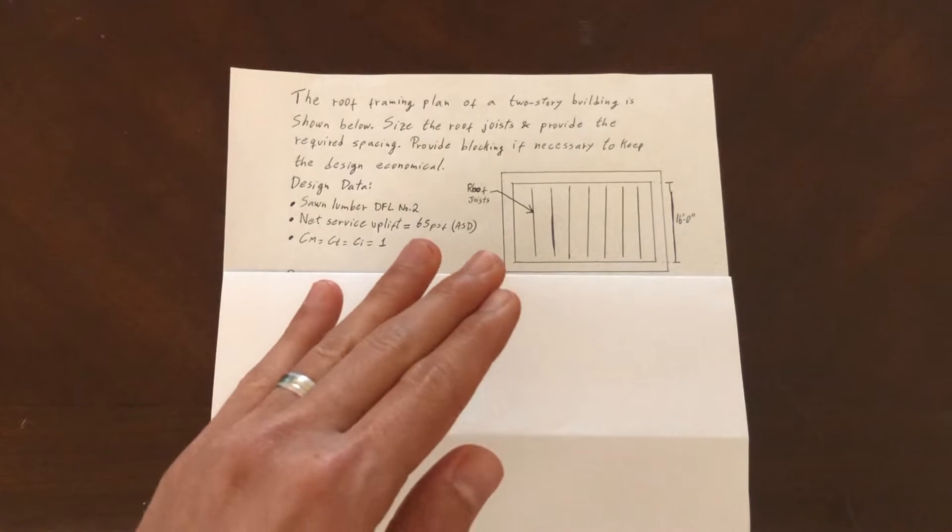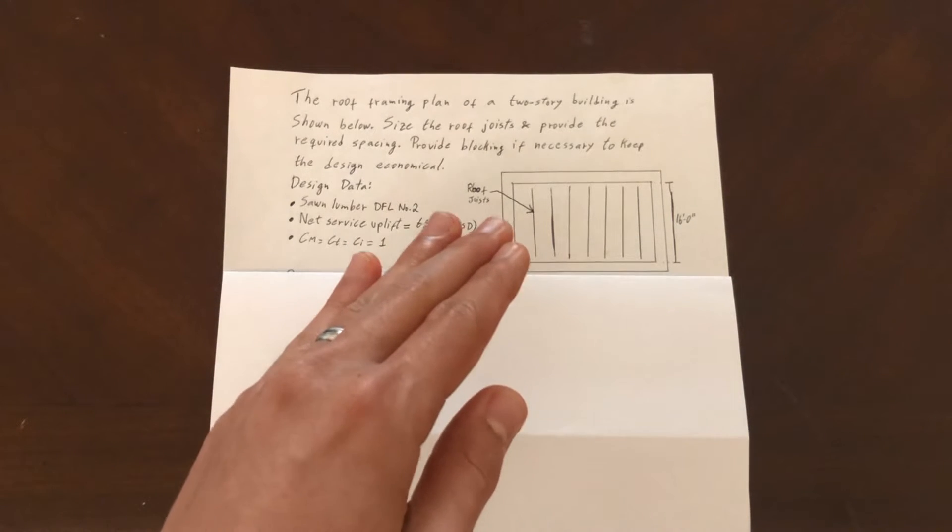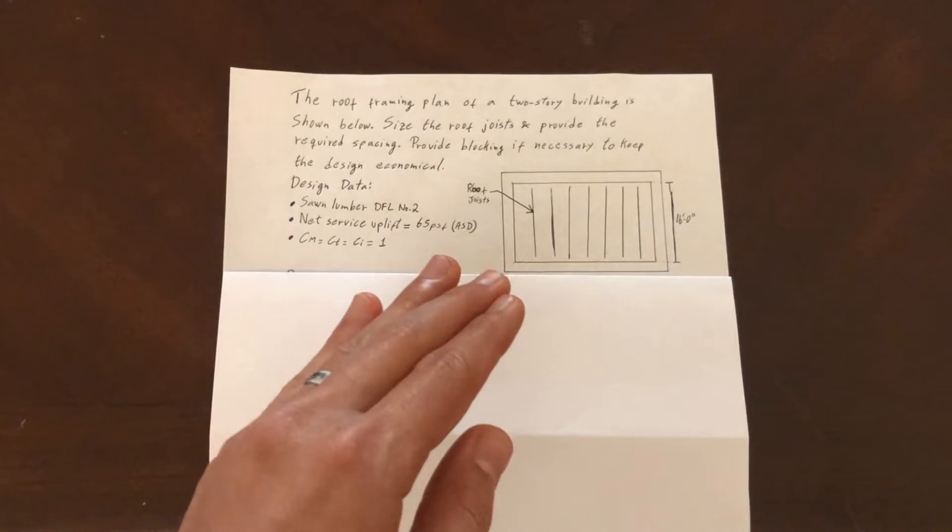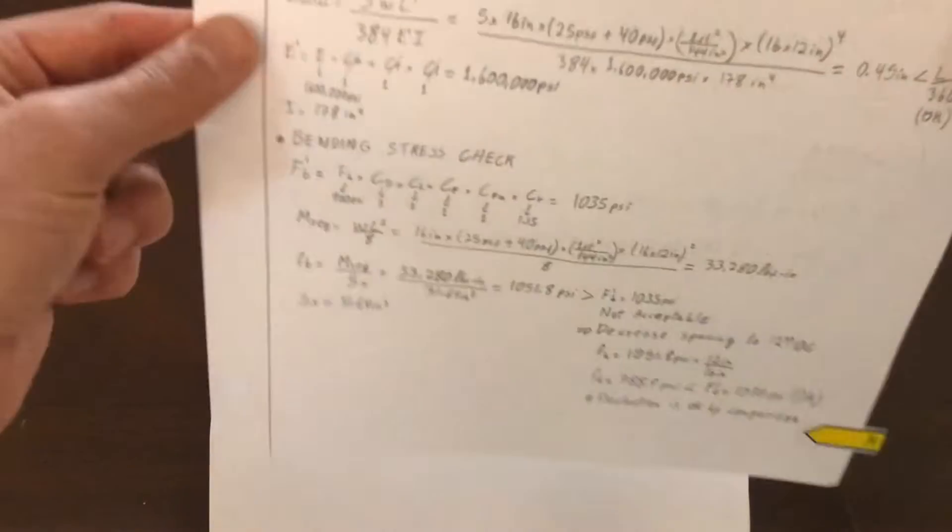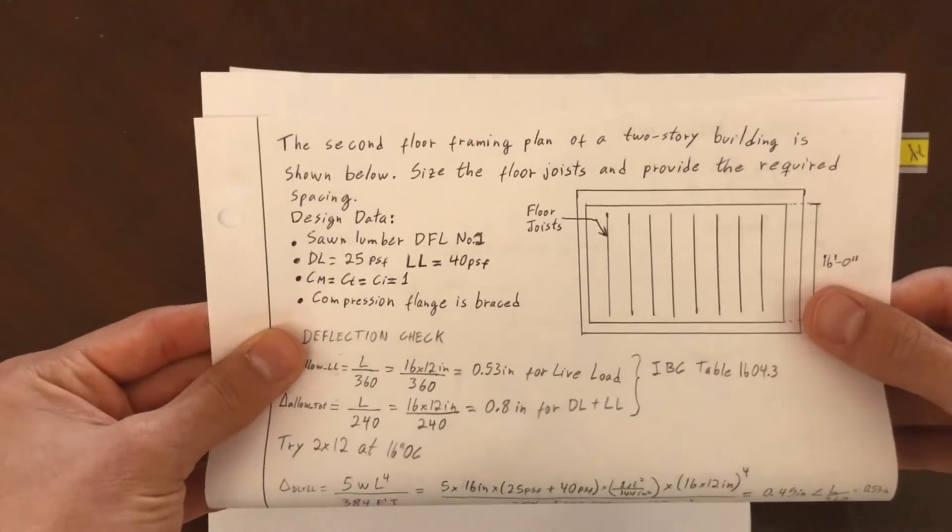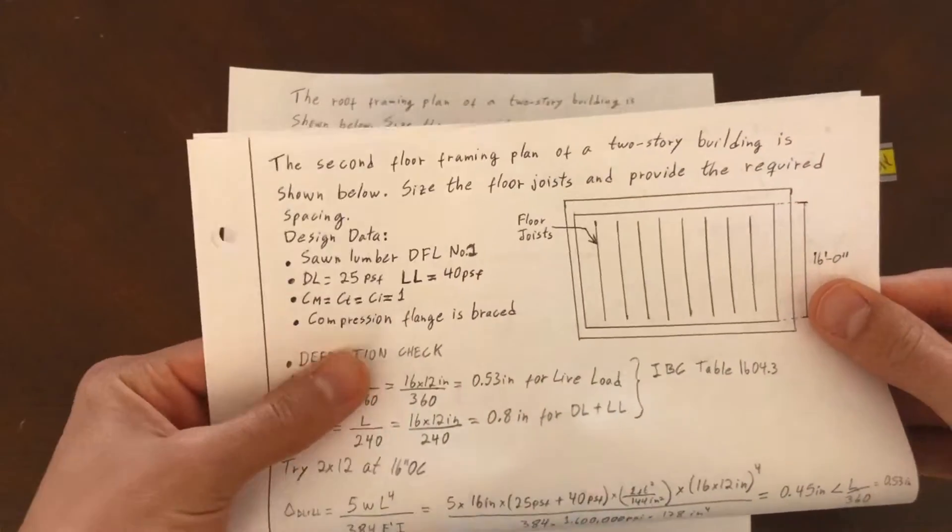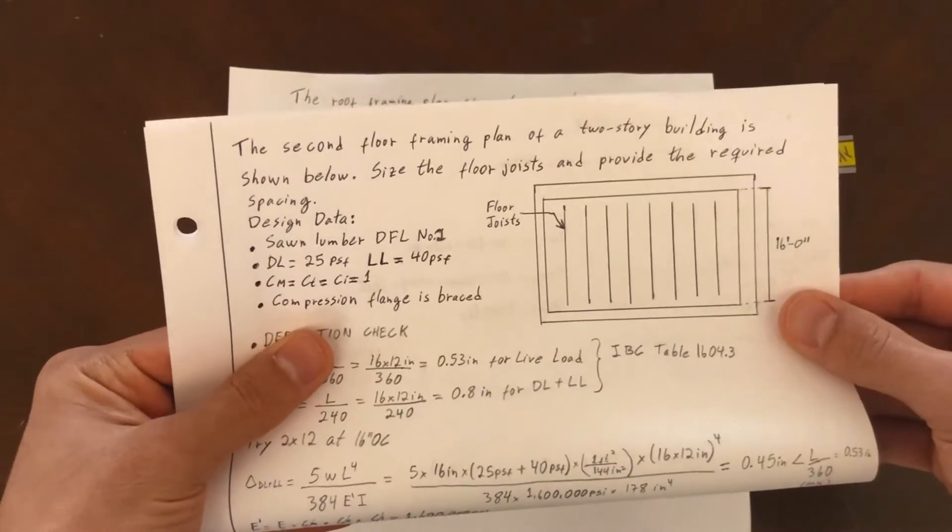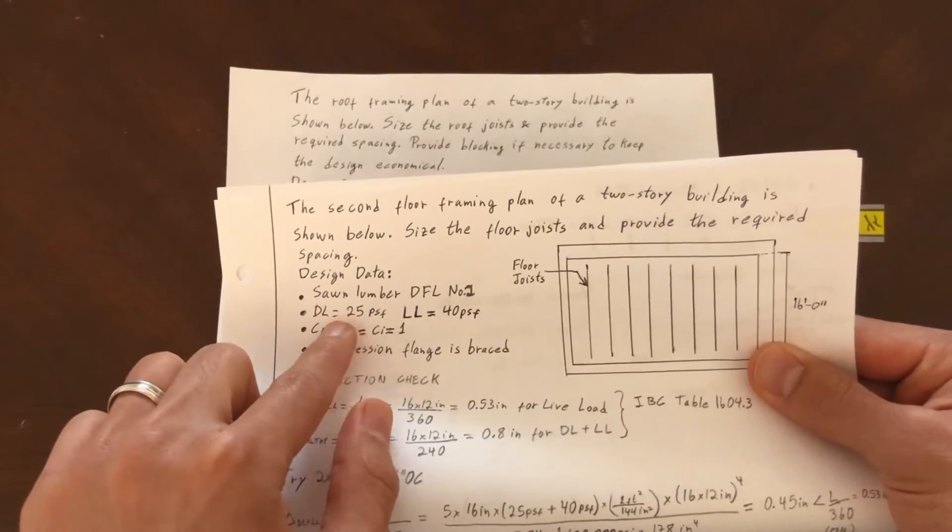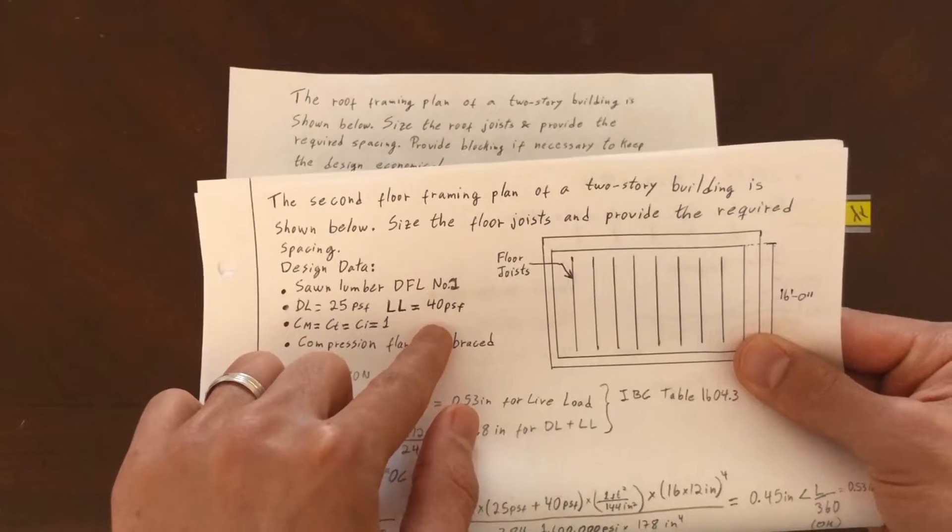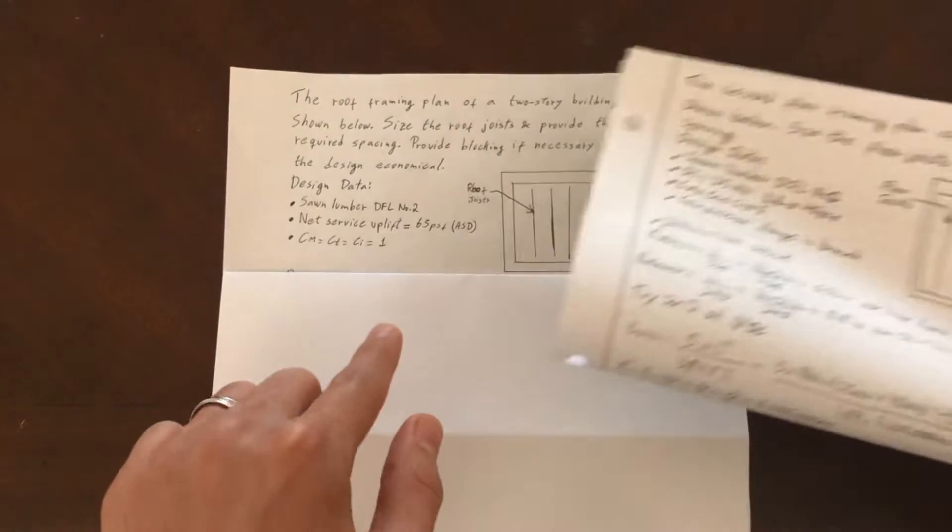If you recall our previous problem, this one is very similar. It's pretty much the same building, but now we're designing the roof joists instead of the floor joists. I have here the previous problem that we solved in the previous video. It was very straightforward - we checked flexion, bending, and shear.